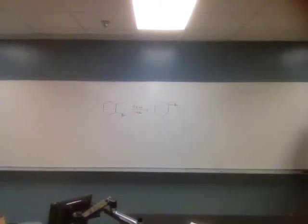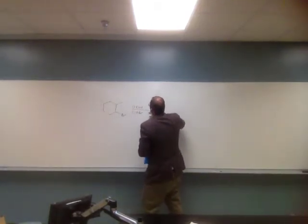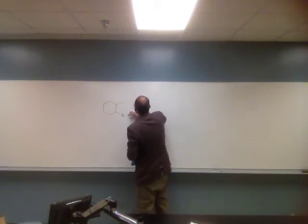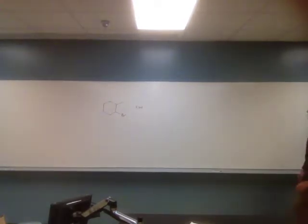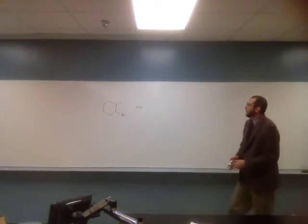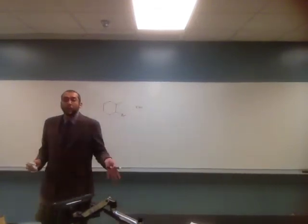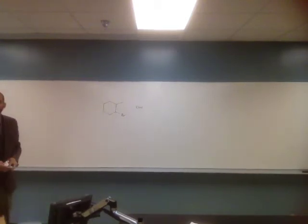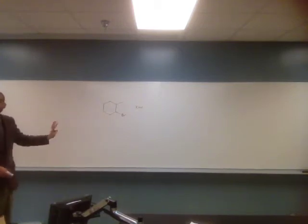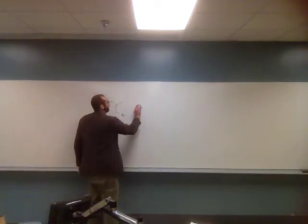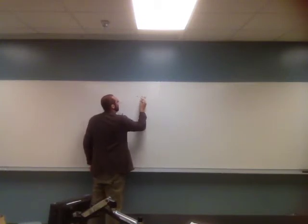The first thing we're reacting the starting material with is potassium hydroxide. What do we know about potassium hydroxide? It's a strong base. What part of KOH is the strong base part? The OH. So what does that make the K? It's just a spectator ion. When we have a spectator ion in the mechanism, we don't even have to put it in there. So let's erase it and just put OH⁻, because that's the important part.